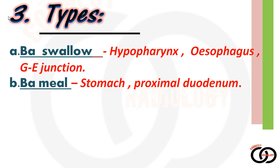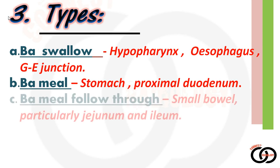The second type is barium meal — here we make the patient ingest 95% weight by volume barium sulfate and then take x-rays. What we can see here is the stomach and the proximal duodenum. The third type is barium follow-through — here we make the patient ingest 50% weight by volume barium sulfate and take x-rays at every 30-minute interval.